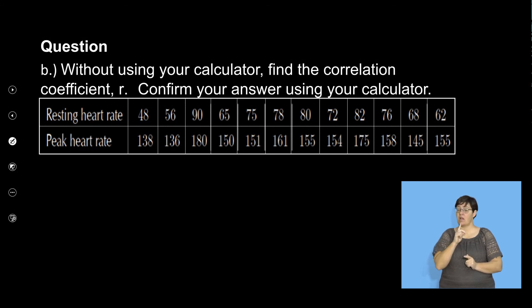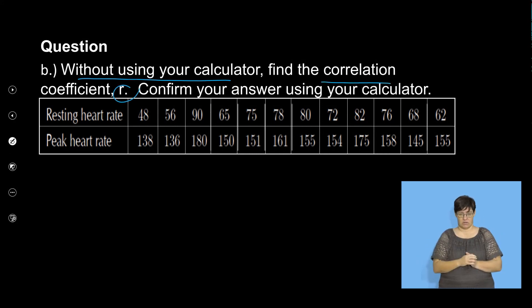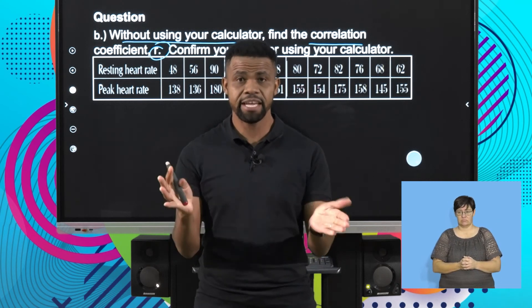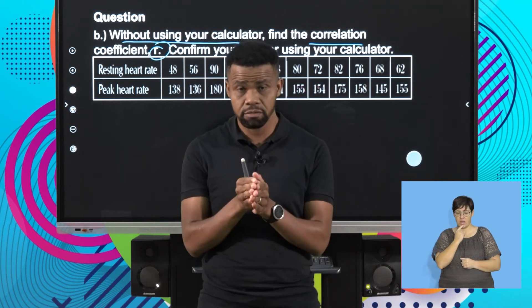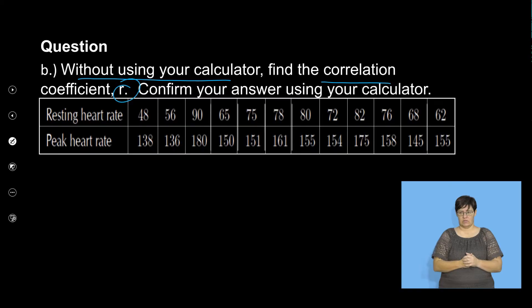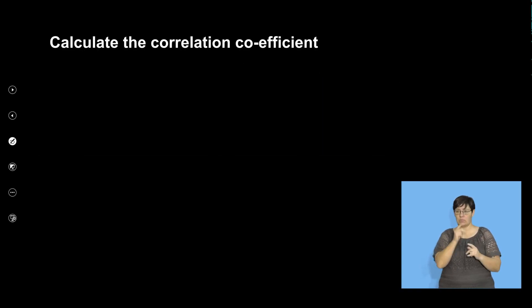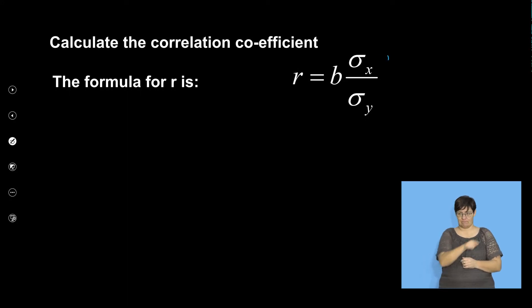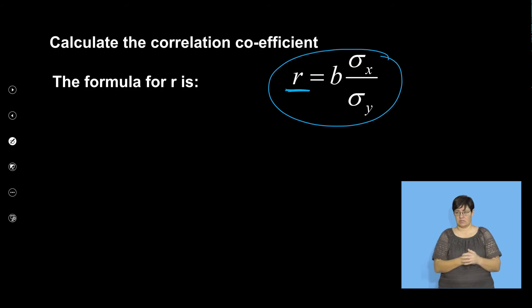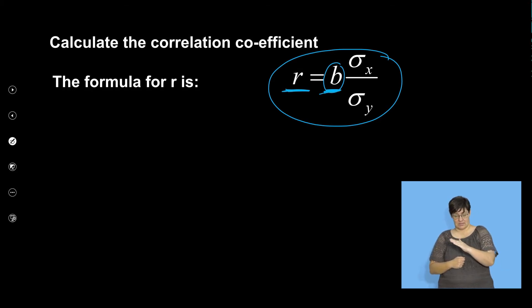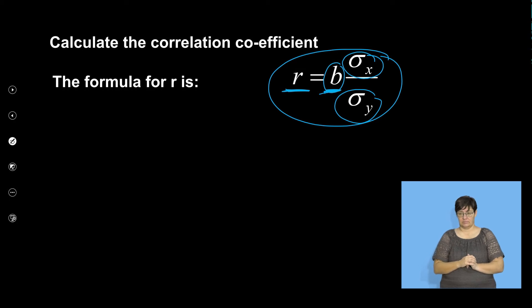Now, without using a calculator, find the correlation coefficient R, and after that we'll confirm using a calculator. So calculating the correlation coefficient, we have to use this formula: correlation R equals b times the standard deviation of x over the standard deviation of y. The b is the gradient of the line of best fit.